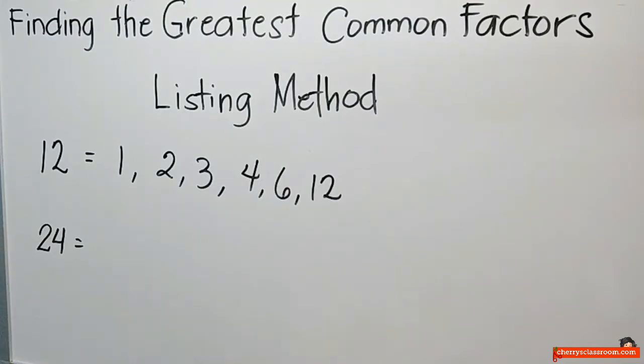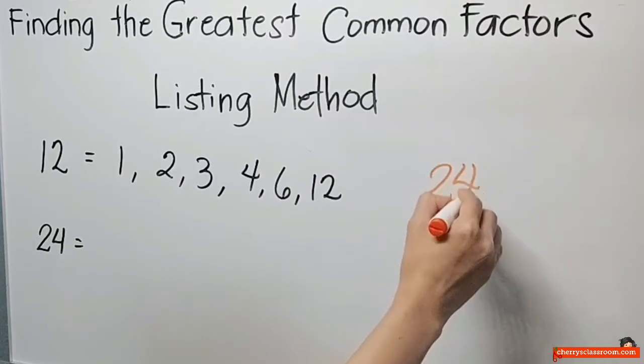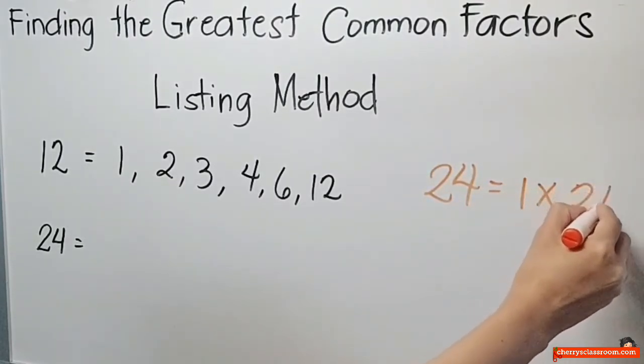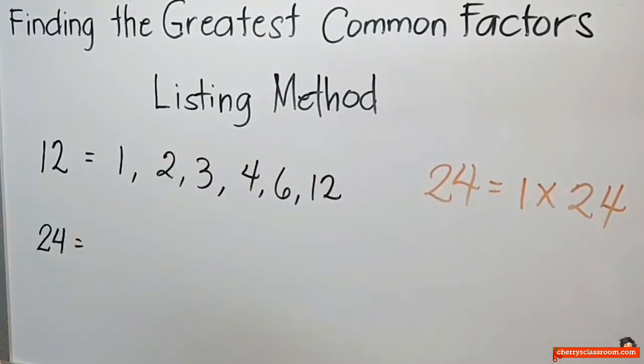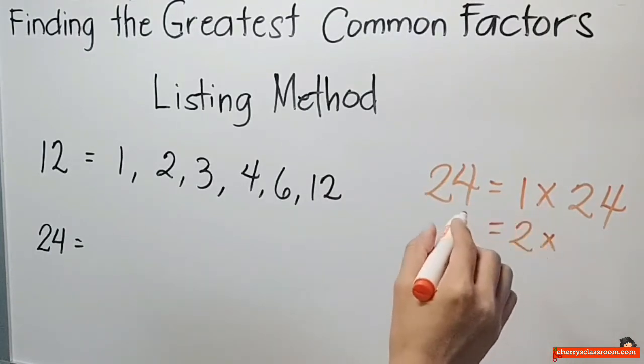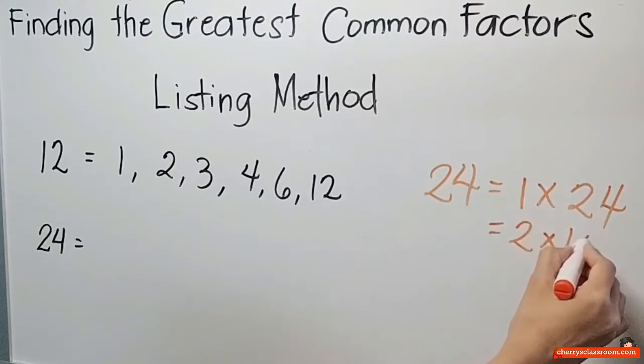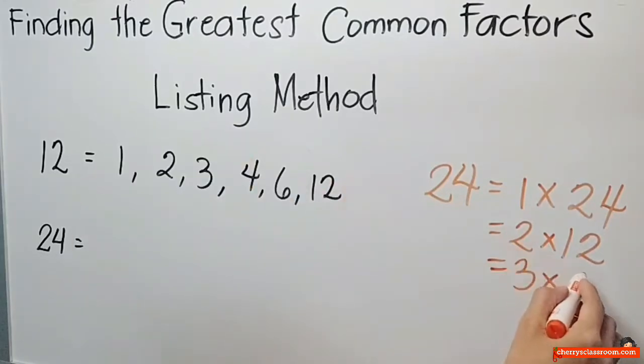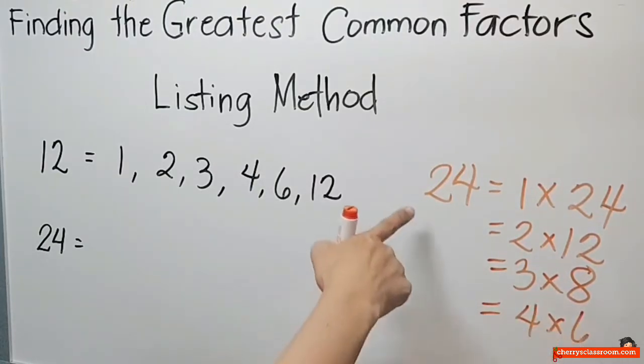Ngayon, ililista ko naman ang factors ng 24. Syempre, 1 times 24. Automatic yun. And then, pwede kaya ang 2? Oo naman. Anong number ang i-multiply ko sa 2, ang sagot ay 24? 12. Ayun. So pwede kaya ang 3? Pwede. So 3 times? Tama. 3 times 8. Ano pa? 4, pwede? 4. 4 times 6 ay 24.